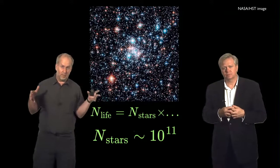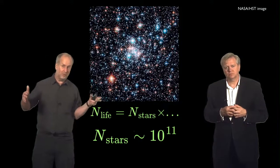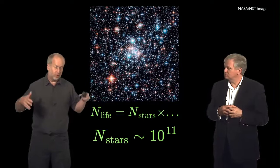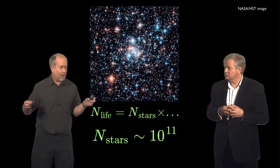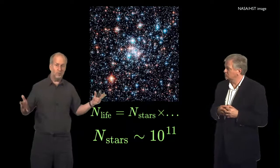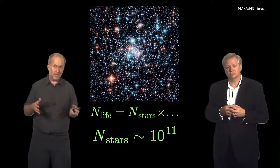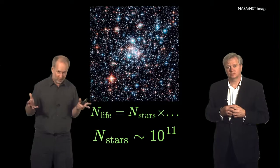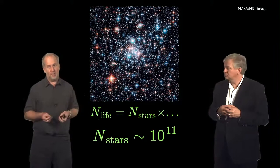If you just take the number of galaxies within range of our telescopes, out to maybe 10 billion light years or so, and we multiply by the typical number of stars in a galaxy, you can work out the number of stars within the observable universe, and it comes out as about 10 to the power 23.